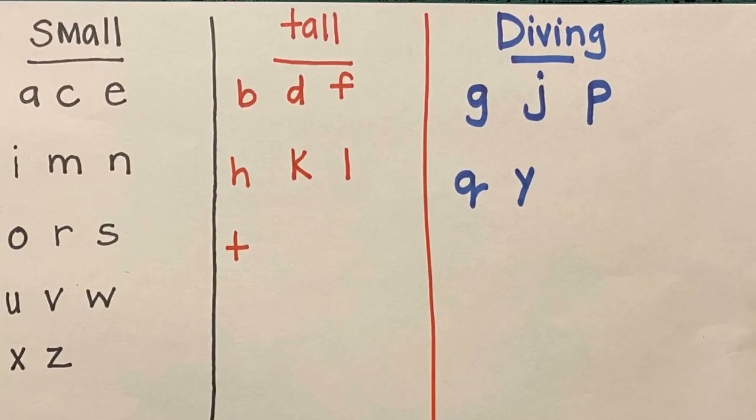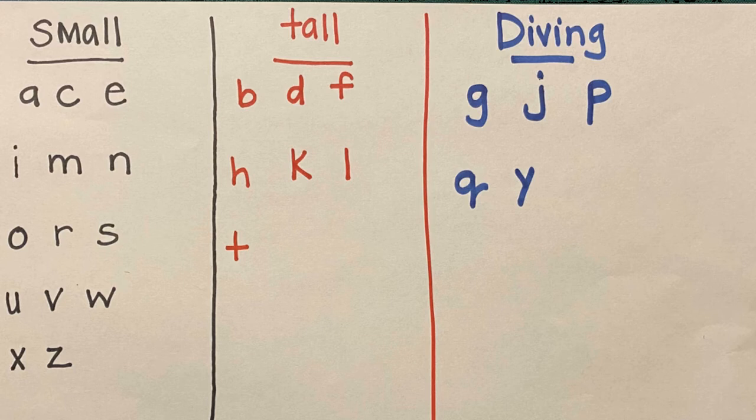Let's compare answers. Small letters are letters A, C, E, I, M, N, O, R, S, U, V, W, X, and Z.